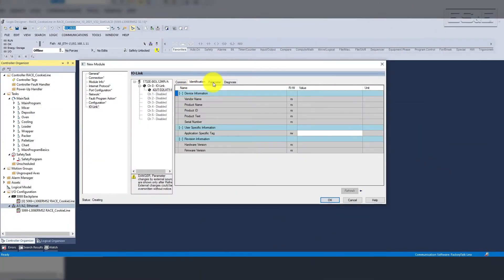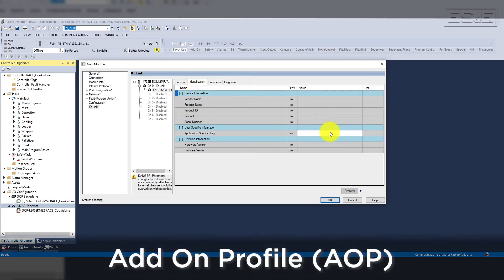Rockwell's IO-Link solution allows for premier integration, starting with programming all done inside Studio 5000 software. Within Studio 5000, you can easily set up an IO-Link Master using its add-on profile or AOP. The AOP will allow you to configure and establish the connection with the Master device.